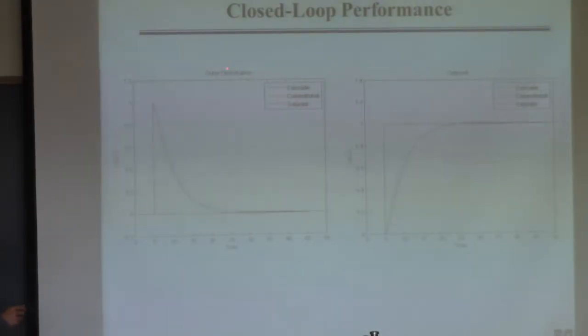So this is a disturbance for both of the two, cascade and regular control, in the outer disturbance. You can see they're barely different, but those are essentially equivalent to each other.